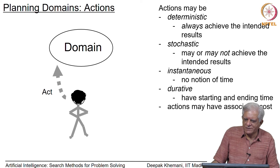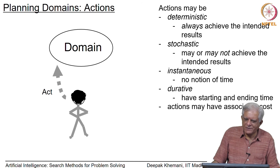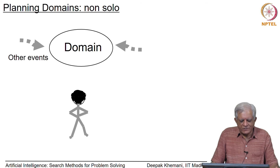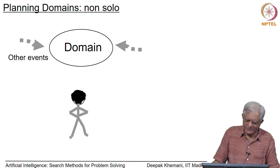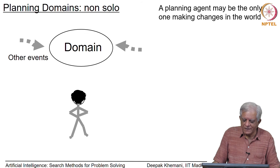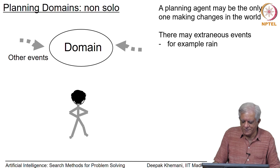Actions may have associated costs, and you may worry about the cost of the plan found. We will confine ourselves to the simplest case: the number of actions to perform, with the shortest plan being the one with the fewest actions. In static domains the agent is the only one acting, so you can entirely predict what the domain will look like after 6 or 10 actions. In a dynamic domain that may not be the case — there may be extraneous events like rain, or shops opening and closing.